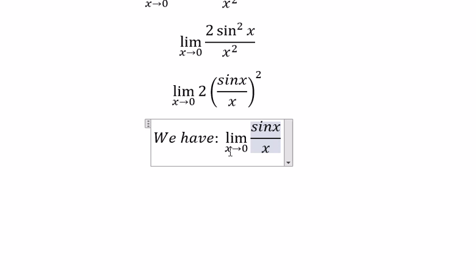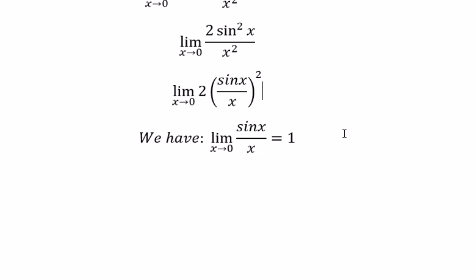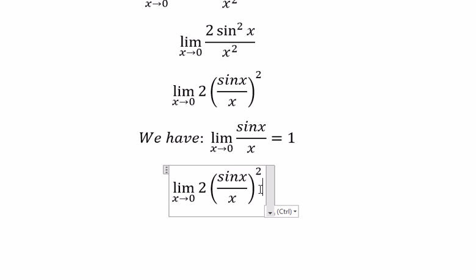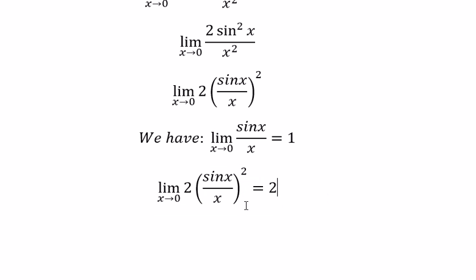the limit as x approaches 0 of sine x over x equals 1. So in this situation, we can get the final answer: number 2, because this limit equals 1.